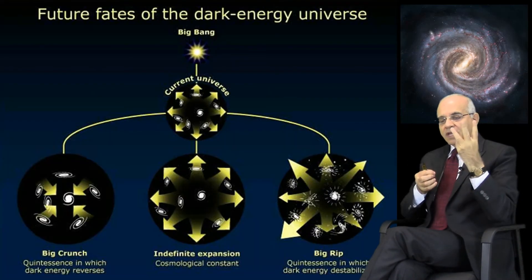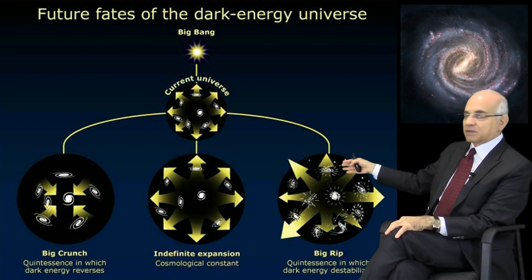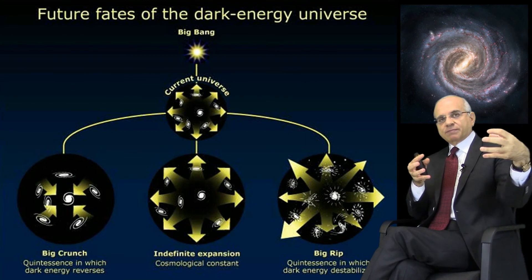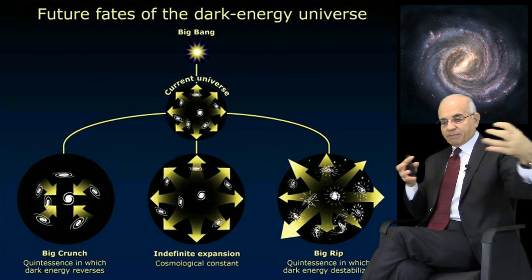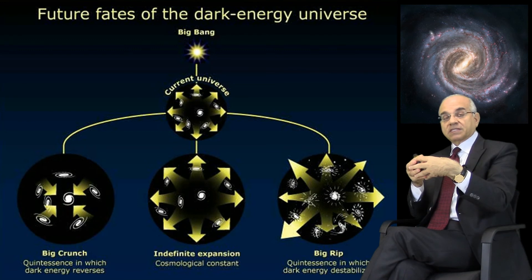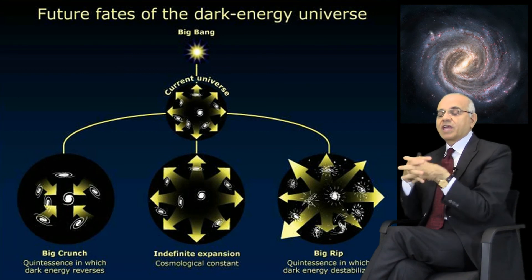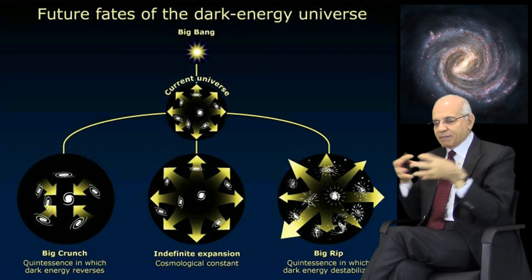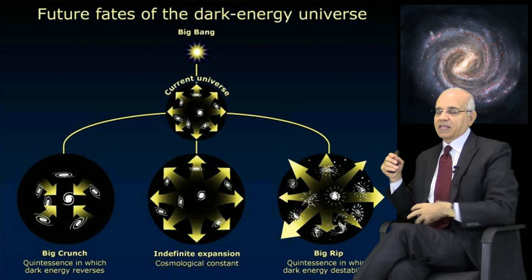So how will the universe end? There are three possible scenarios. First, dark energy may actually slow down and not continue this expansion of space — and may actually reverse. Instead of expanding, it can start retracting, which means galaxies will start moving closer to each other. Gravity will become stronger and attract these galaxies together, and we have what they call the Big Crunch — a big crash of all this matter from all these galaxies colliding with each other. That's one possibility.